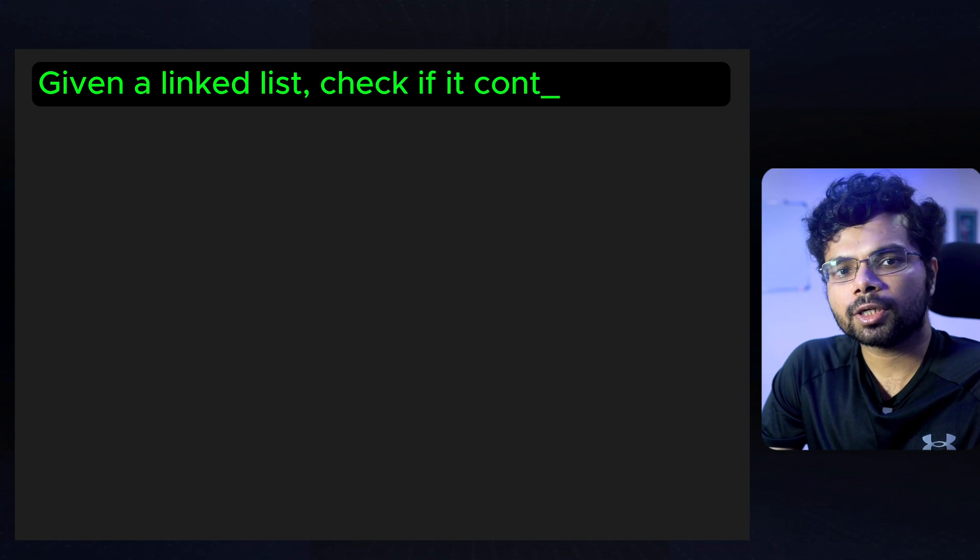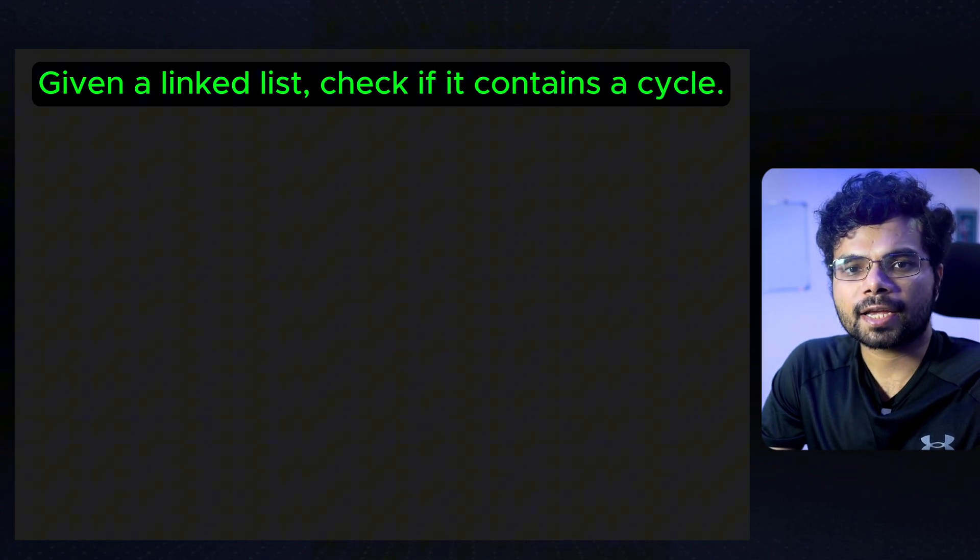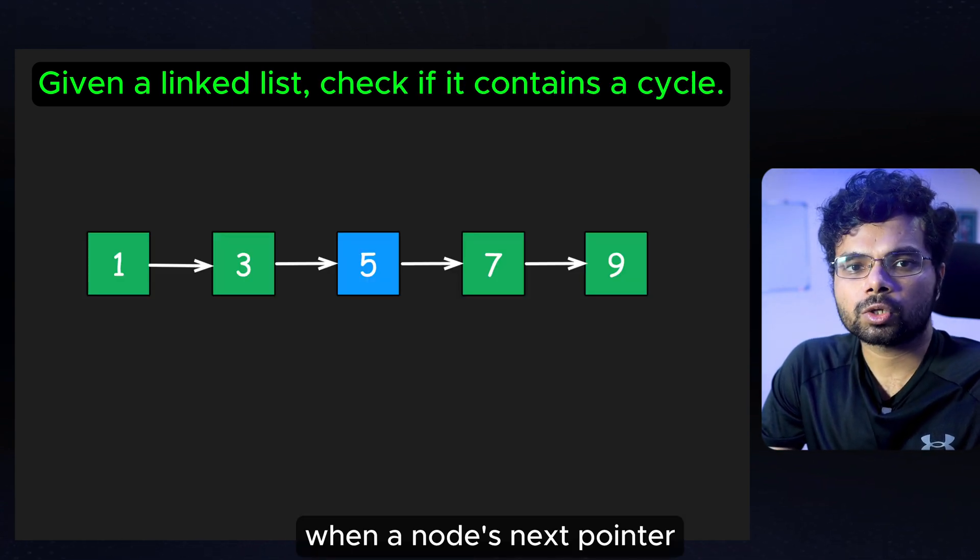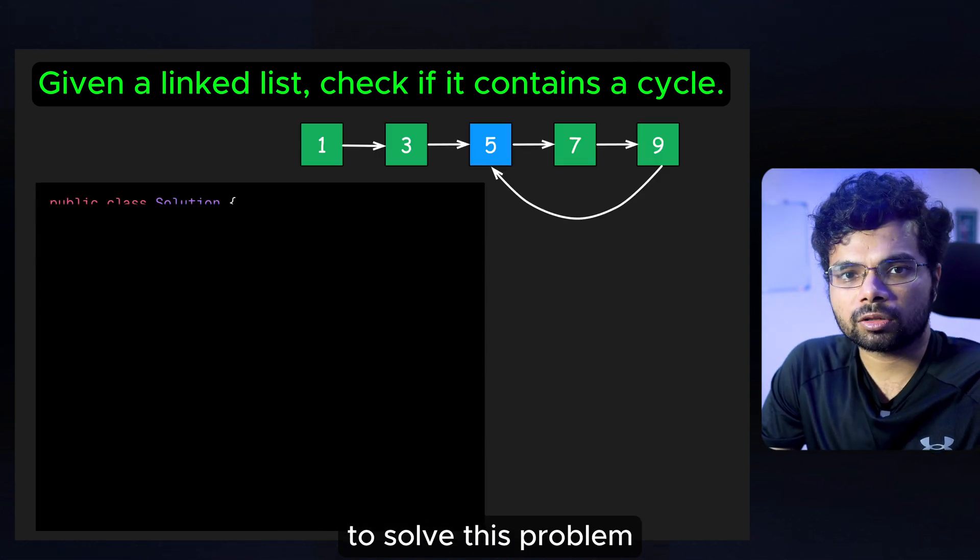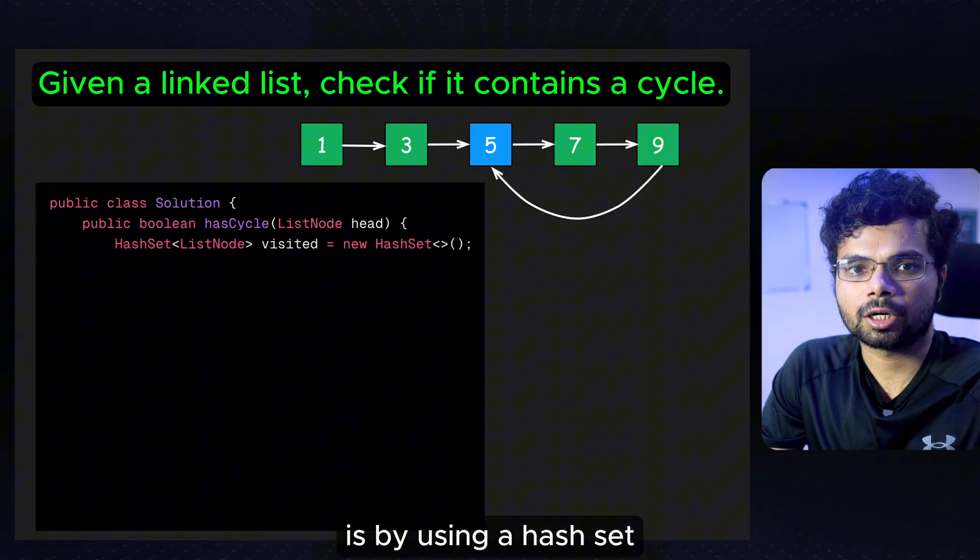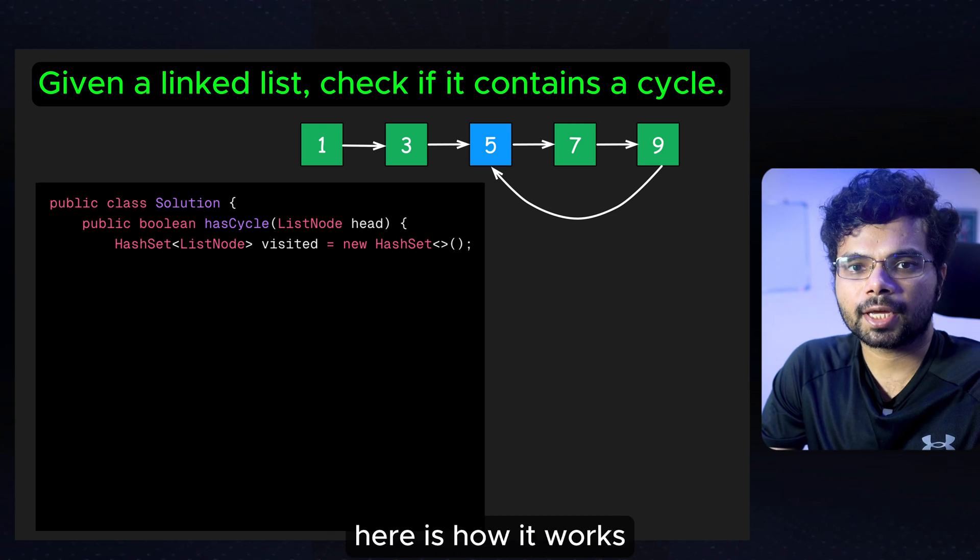You are given a linked list and you need to check if it contains a cycle. A cycle in a linked list occurs when a node's next pointer points back to a previous node. One straightforward approach to solve this problem is by using a hash set to track the nodes you have already visited. Here is how it works.